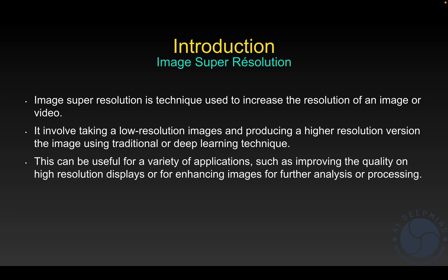Deep learning is able to generate the lost pixels, and it gives high resolution images that look more realistic to our eyes, with even more texture detail. That was the definition of image super resolution — it involves taking low resolution images and producing high resolution images.